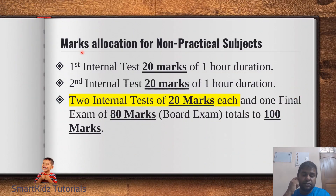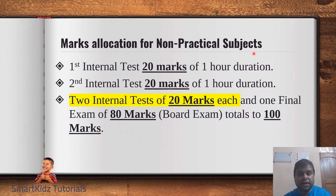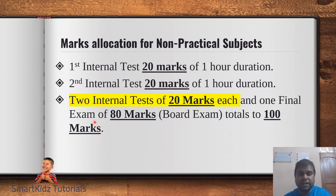The distribution of marks is divided into two parts — non-practical subjects and practical subjects. Non-practical subjects include everything except science. For non-practical subjects: the first internal test is for 20 marks (one hour duration), the second internal test is also for 20 marks (one hour duration). The final board exam is for 80 marks, bringing the total to 100. Science is calculated differently and will be discussed separately.